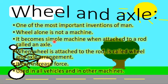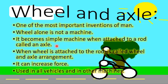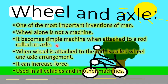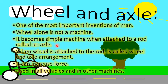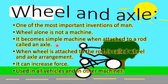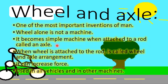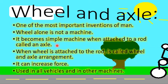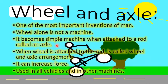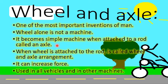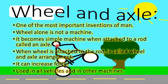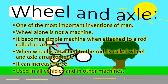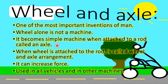Wheel alone is not a simple machine; it becomes a simple machine when attached to a rod called an axle. When the wheel and axle work together, they can make our work easier and increase the force. All vehicles use wheel and axles to move, and wheels and axles are also used in many other machines.